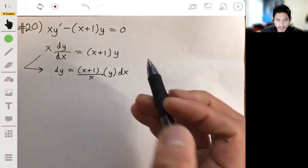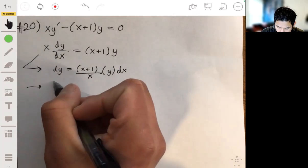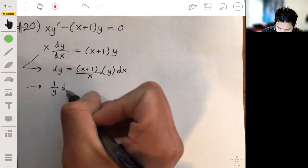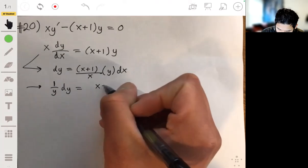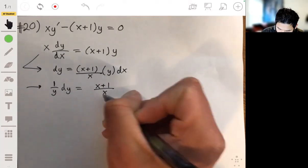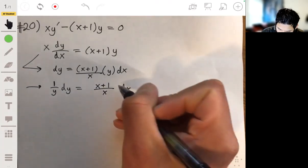And now we just divide that y. So we get 1 over y dy equal to x plus 1 over x dx on the right side.